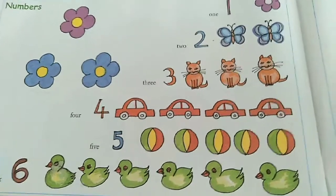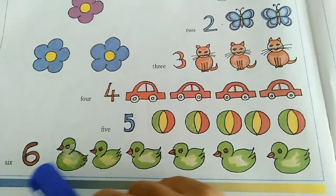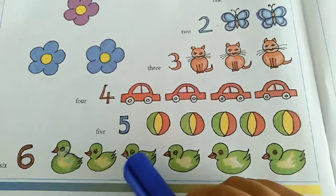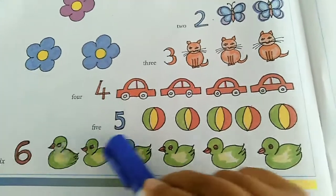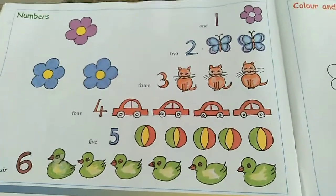The final number is number 6, and there are six. See. One, two, three, four, five, six. Six ducks. Okay, children. Today we have learned numbers from one to six.